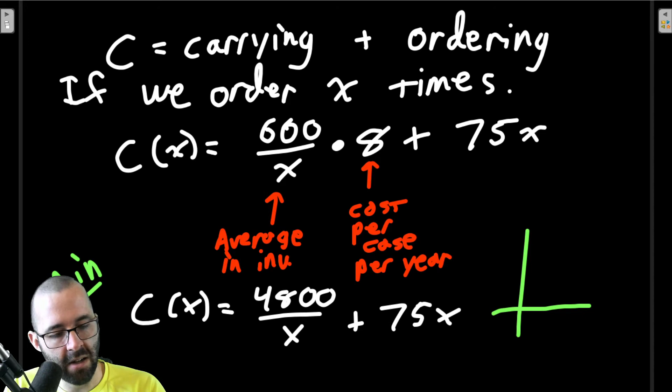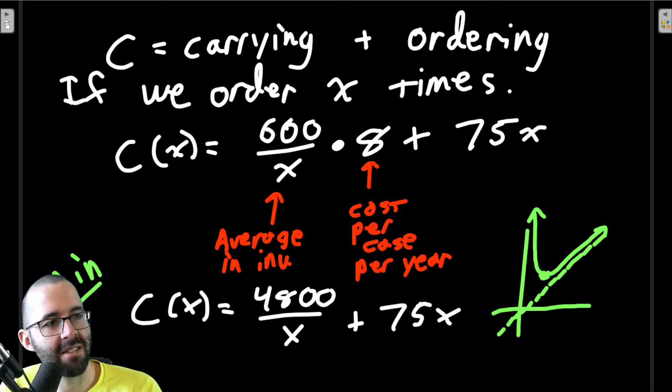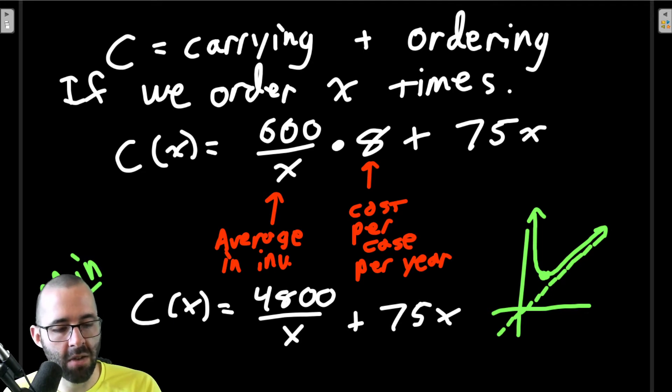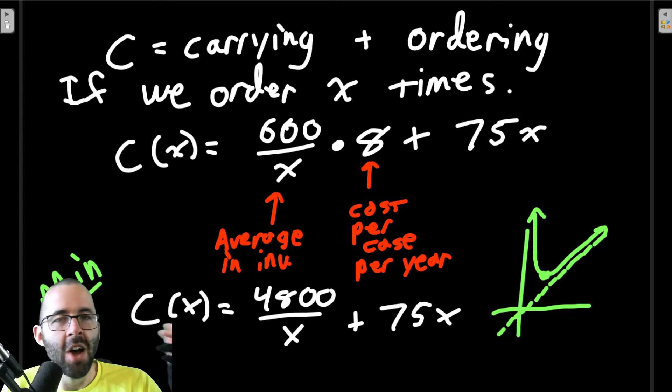We need to minimize this function. This function has a diagonal asymptote and looks like this. We're looking for that minimum value.